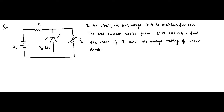Here is another question on Zener diode circuits. In this circuit we have a Zener diode with a breakdown voltage of 12 volts. The voltage across the load resistor has to be maintained at 12 volts — obviously, as the breakdown voltage is 12 volts. The load current varies from 0 to 200 milliamperes, meaning the minimum value is 0 and the maximum value is 200 milliamperes.